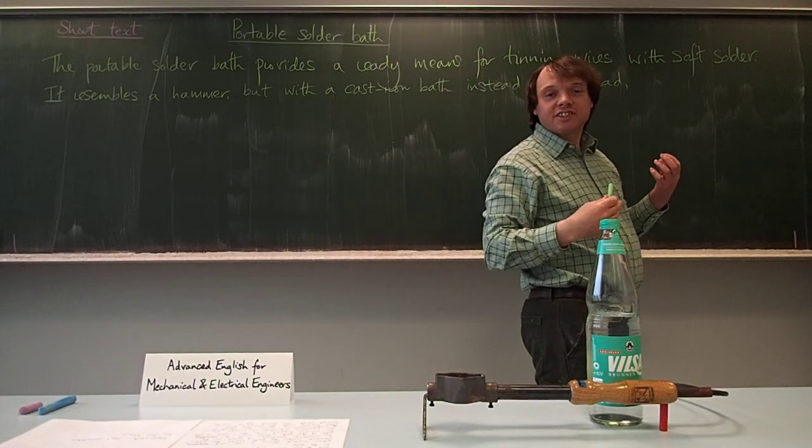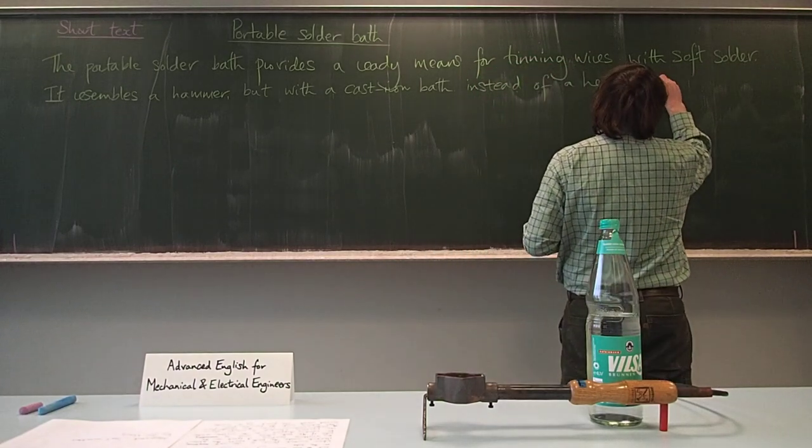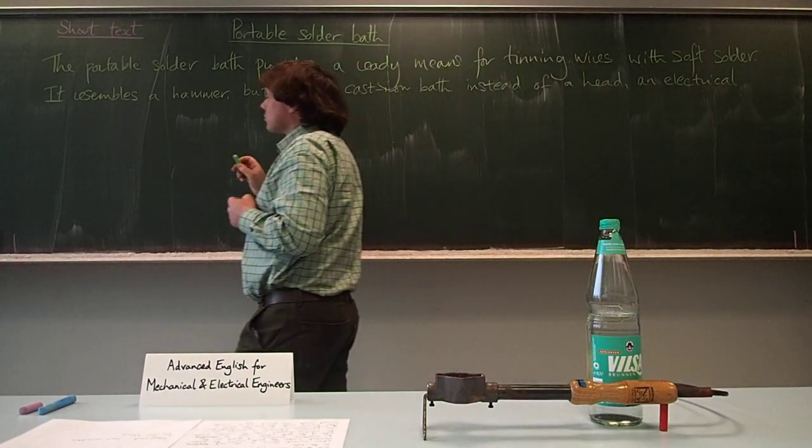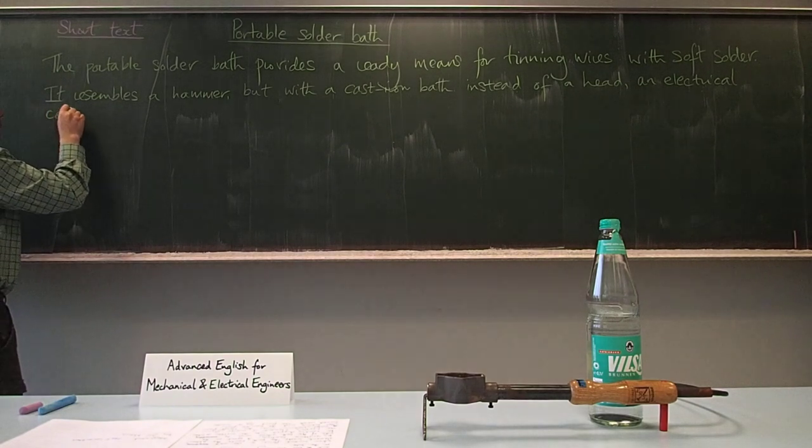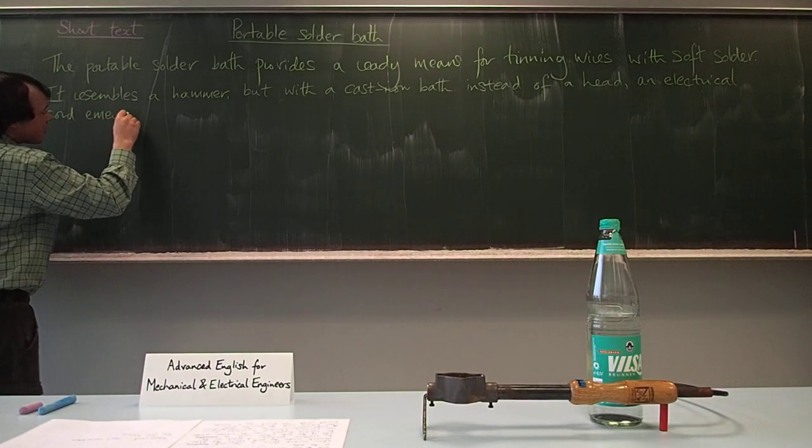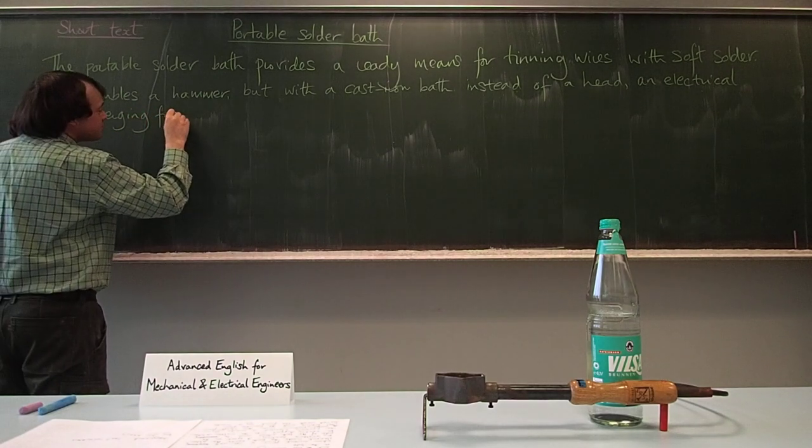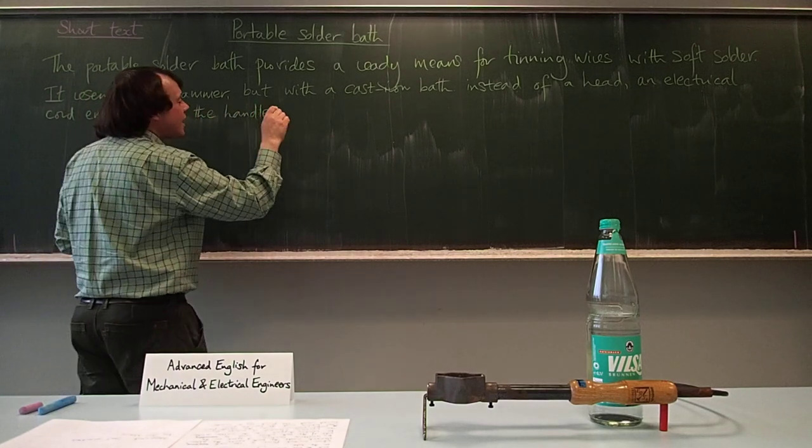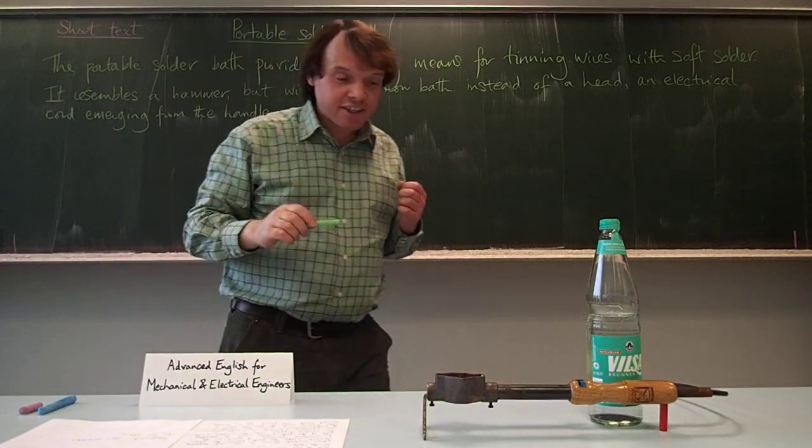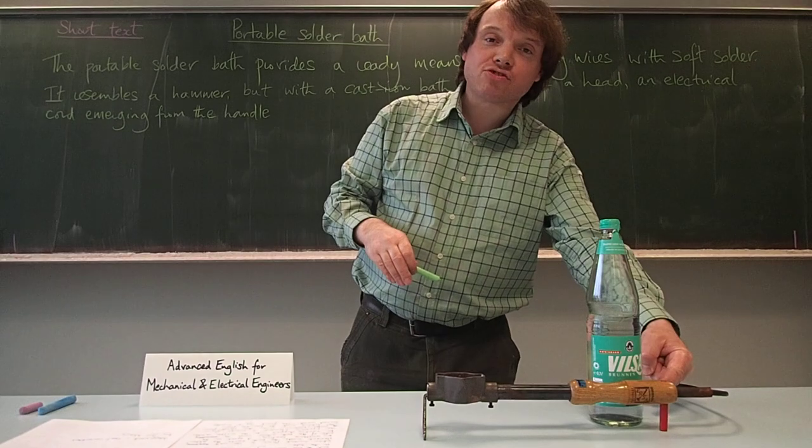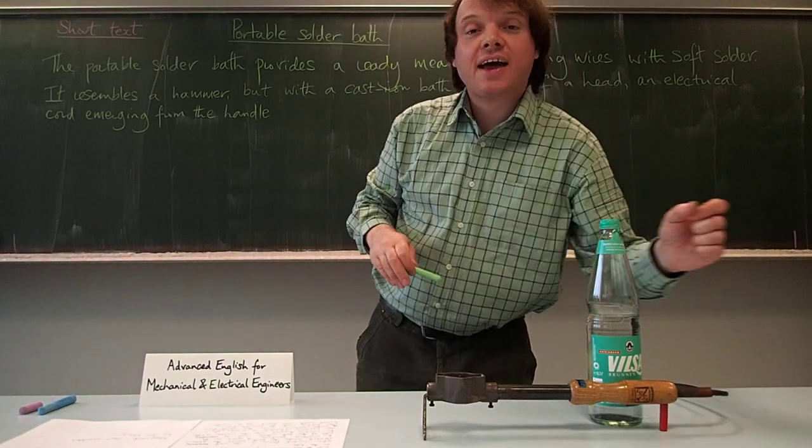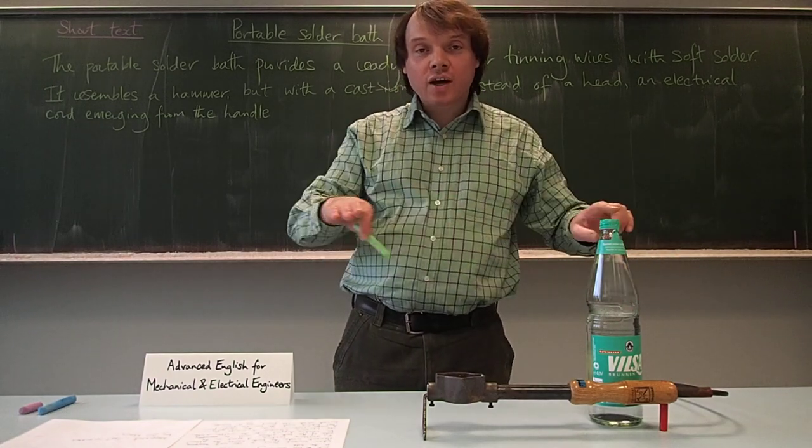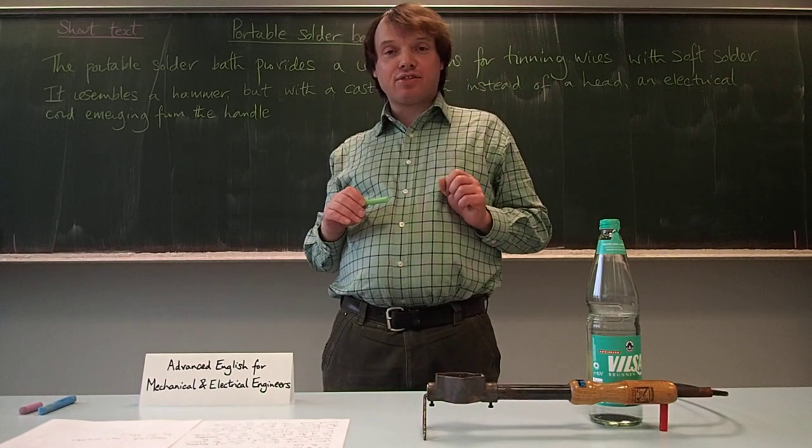Now we'll mention the other differences - the electrical cord here. An electrical cord emerging from the handle. And if you've noticed, it also has two thermally insulating legs here. So this red leg here at the back is made of plastic, and it supports the portable solder bath so that the whole shaft here is horizontal.